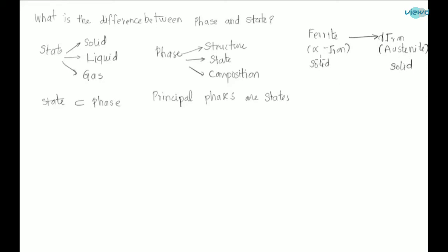Ferrite and austenite are both of same state, but ferrite and austenite are not of same phase. State is same, but phase is different. This is phase one, this is phase two. These two are differentiated based on their structure.